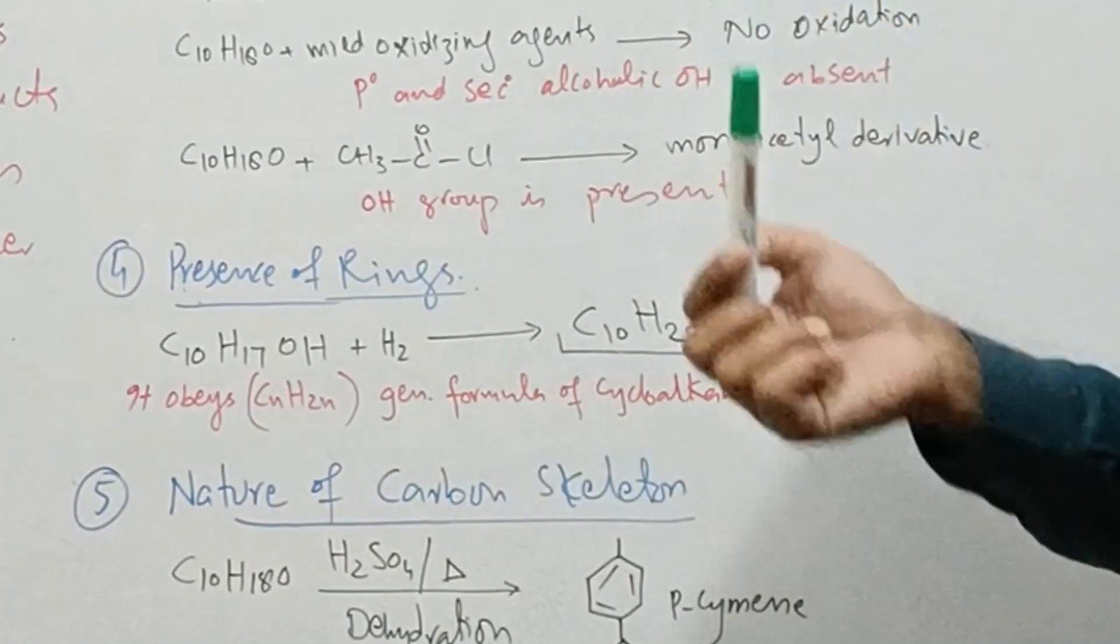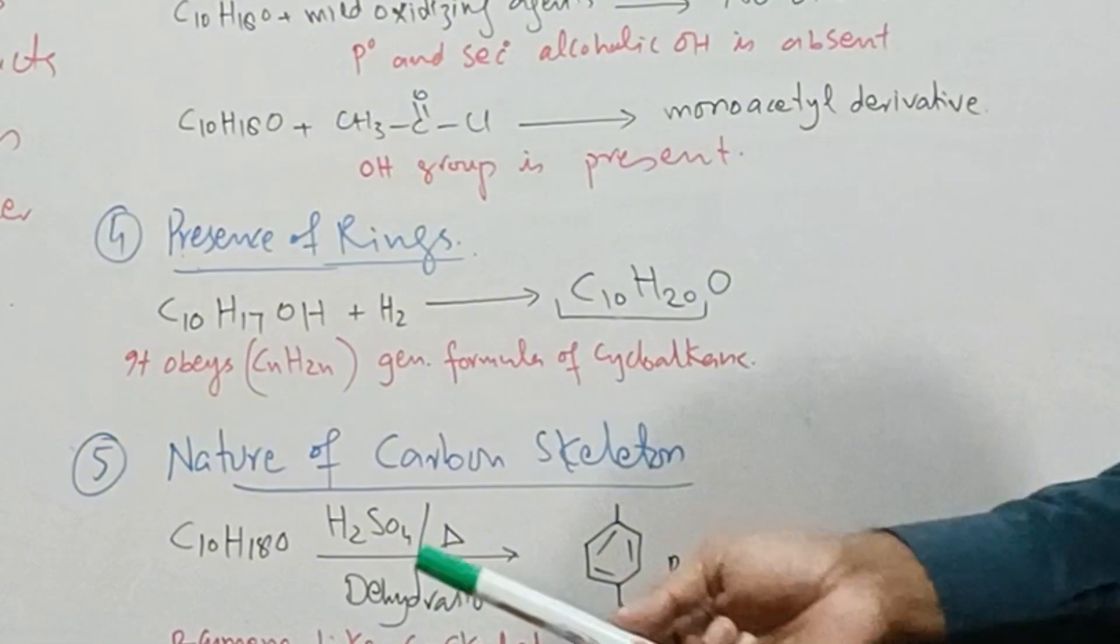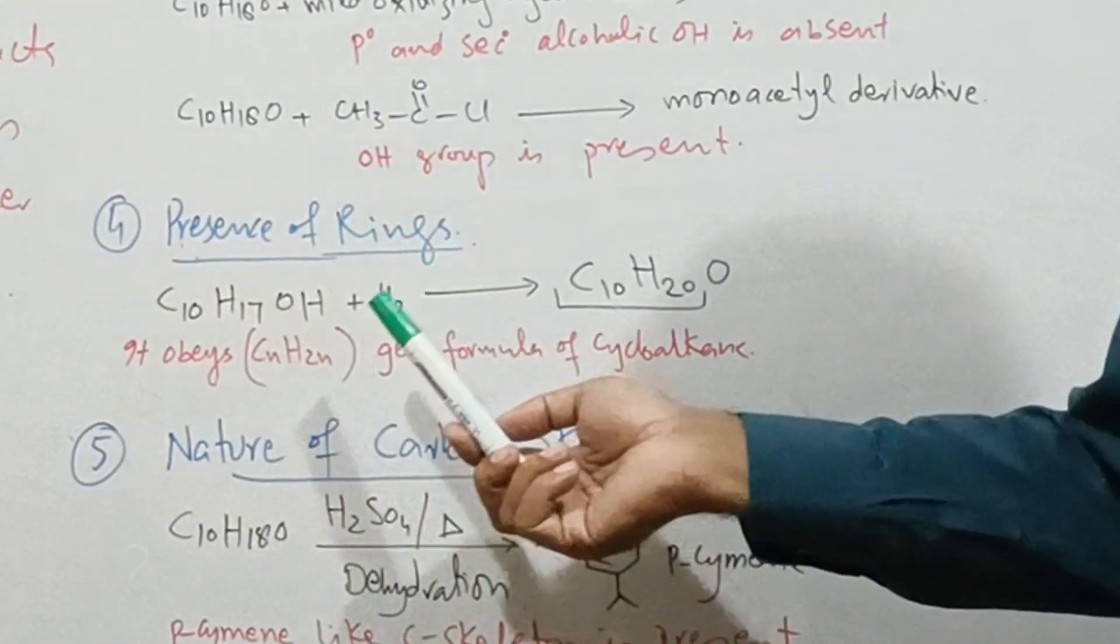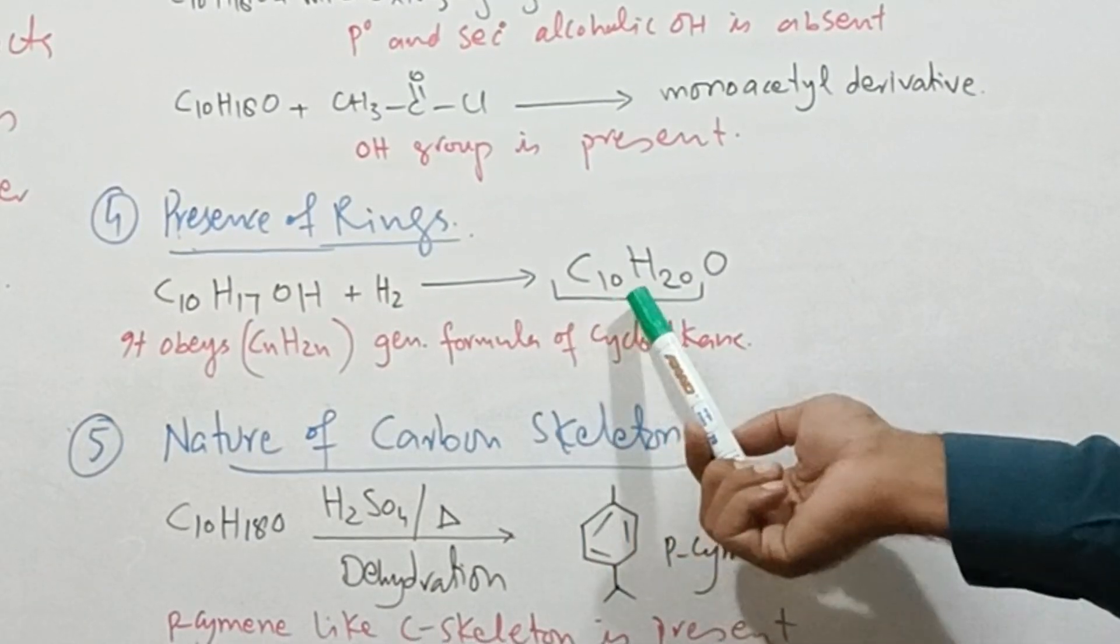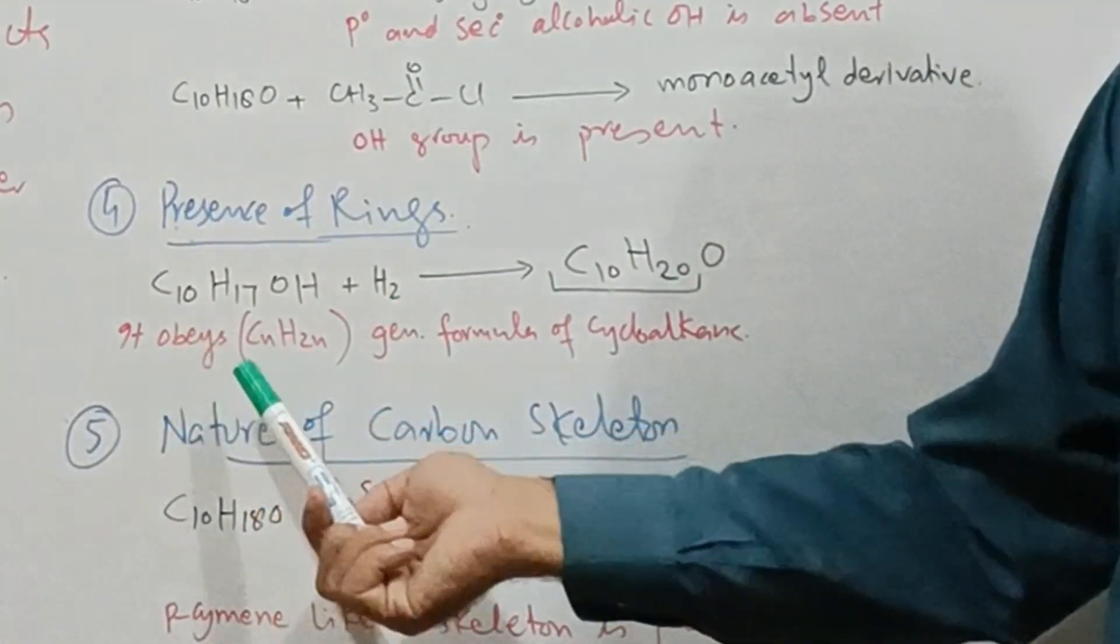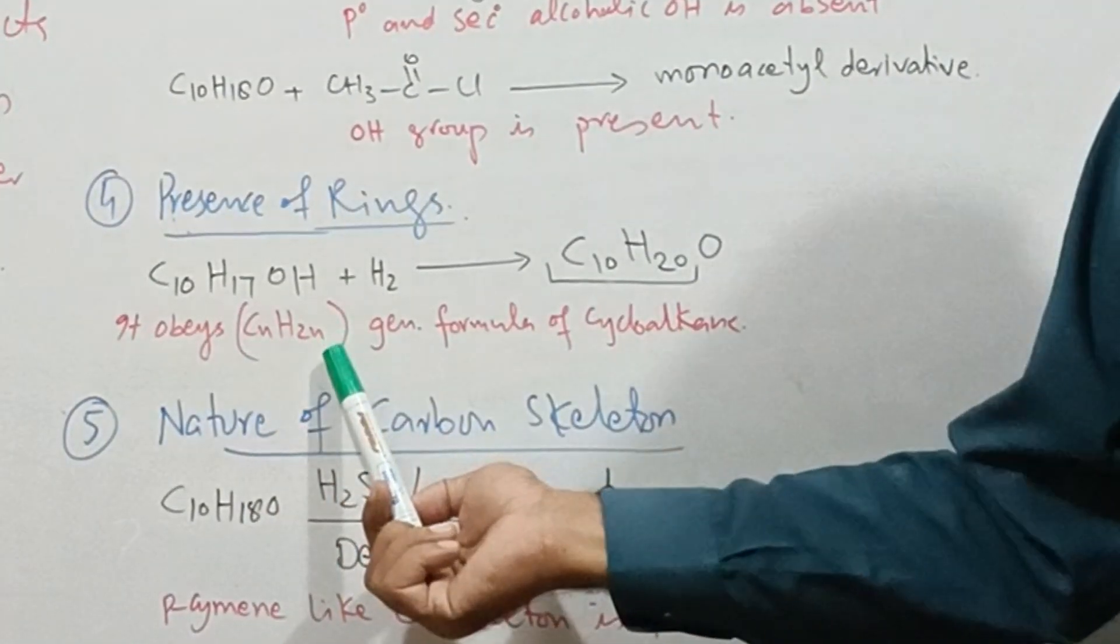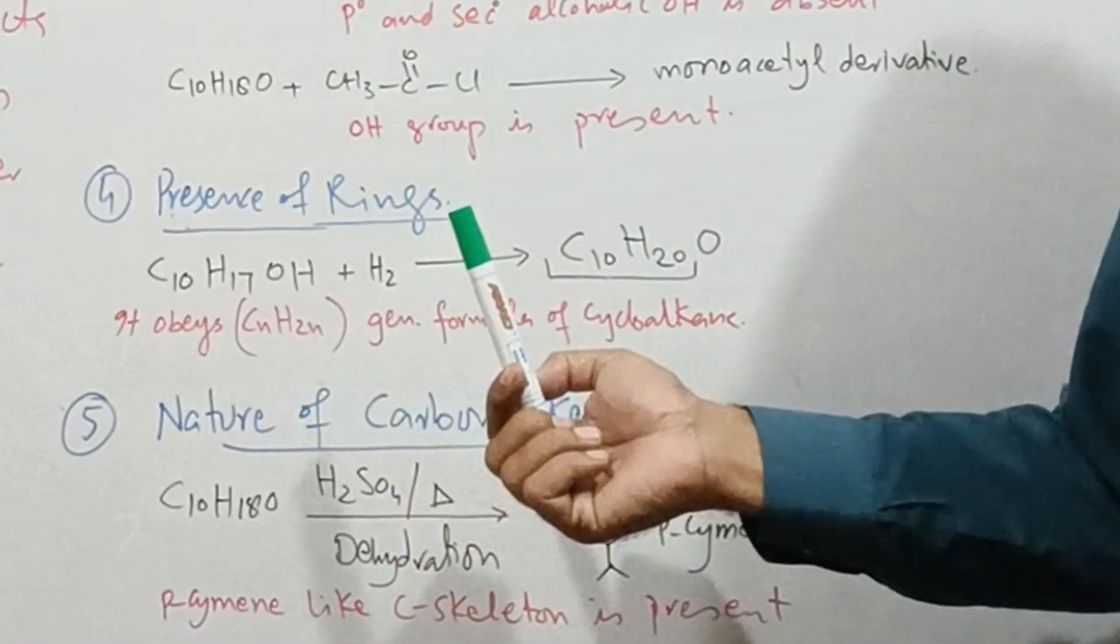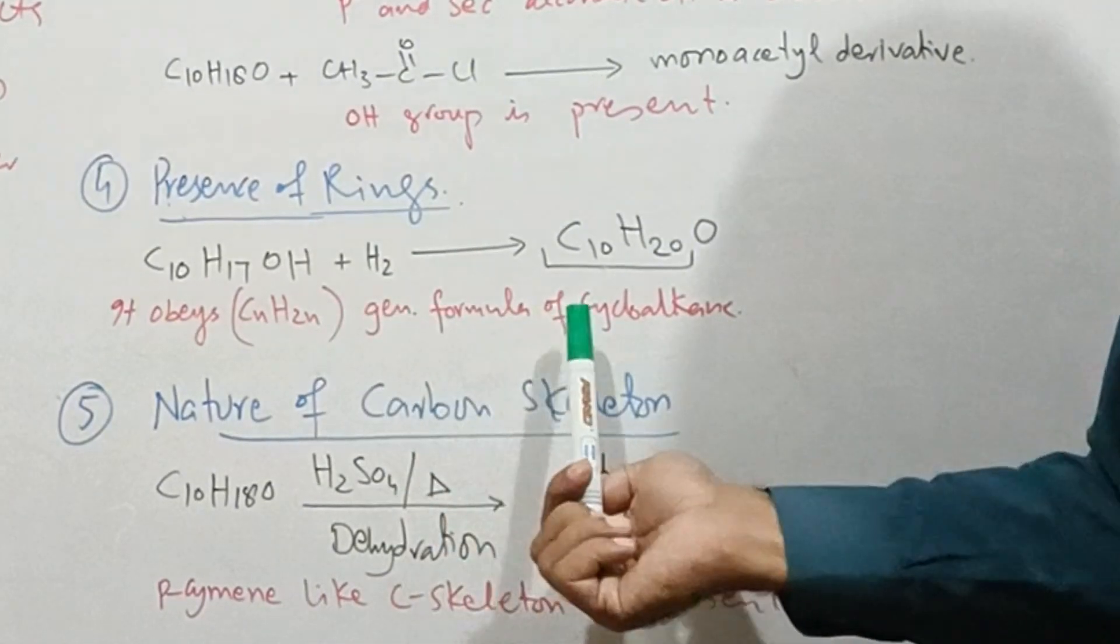To detect whether the structure is open chain or contains a ring: when alpha-terpineol is hydrogenated, the saturated compound formed obeys the general formula of saturated cycloalkane. This shows a ring is present in the alpha-terpineol structure.